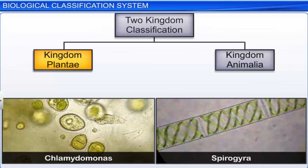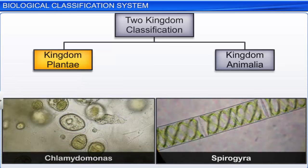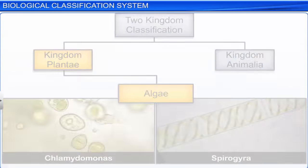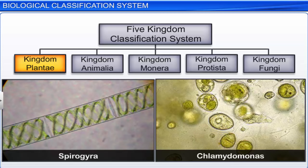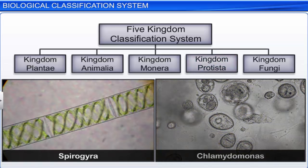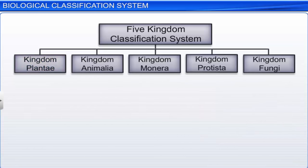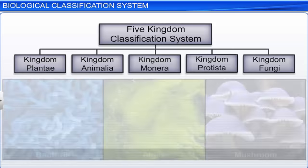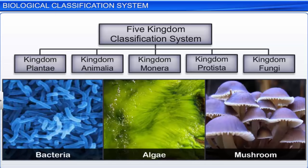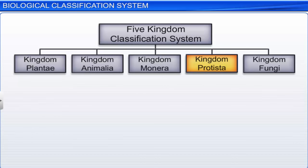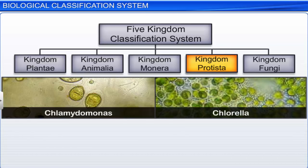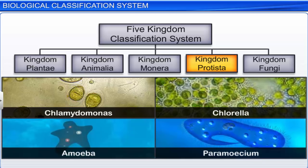In kingdom Plantae previously, unicellular Chlamydomonas and multicellular Spirogyra were placed together under algae. However, in the new classification system, Chlamydomonas moved to kingdom Protista, while Spirogyra remained in kingdom Plantae. Kingdom Protista brought together both Chlamydomonas and Chlorella with other eukaryotes like Amoeba and Paramecium, which were initially placed in kingdom Animalia.